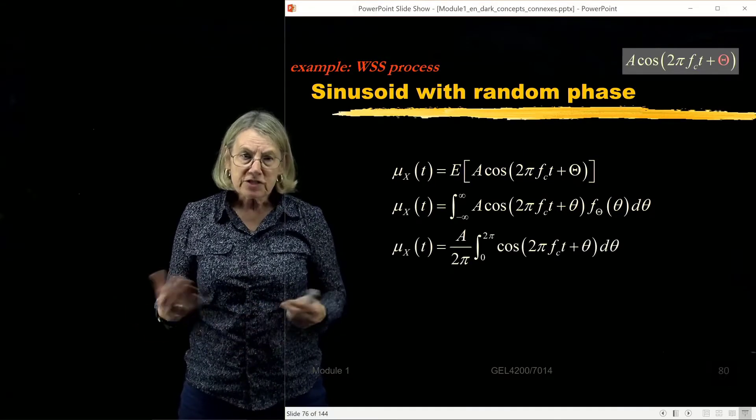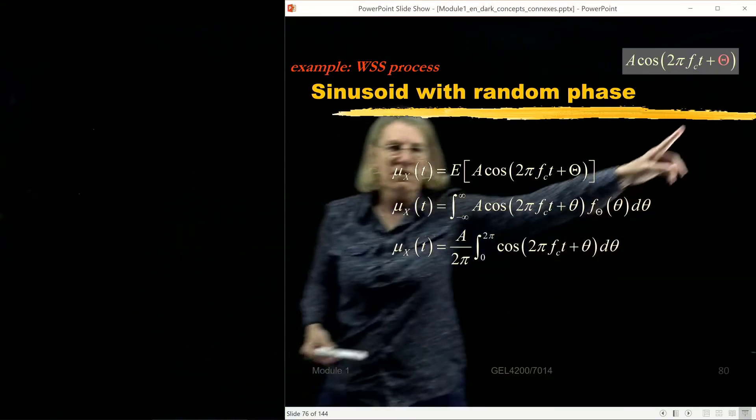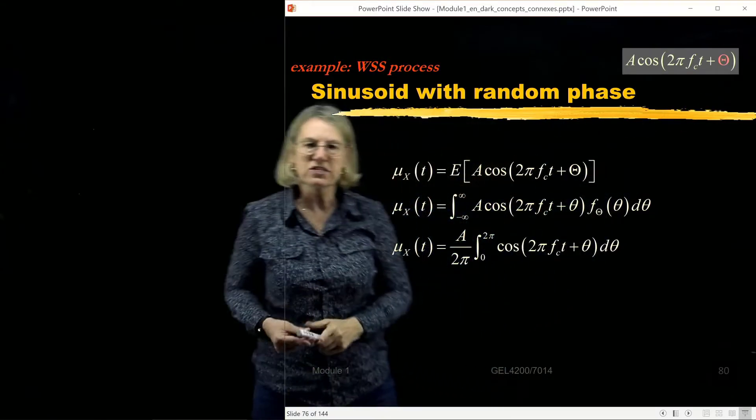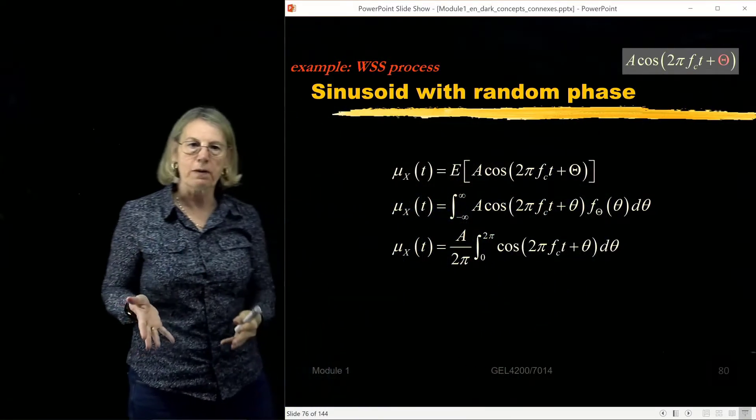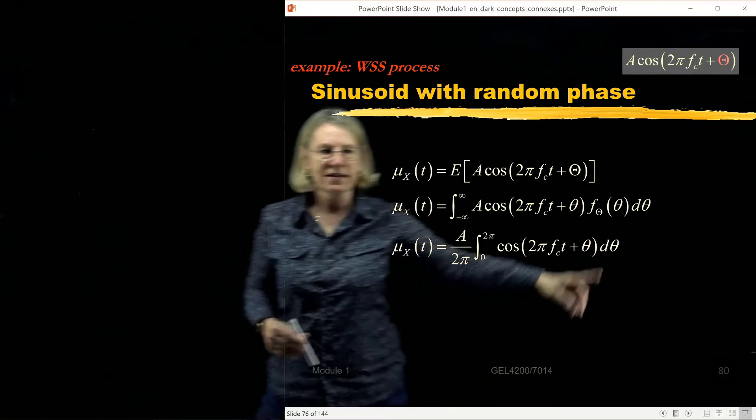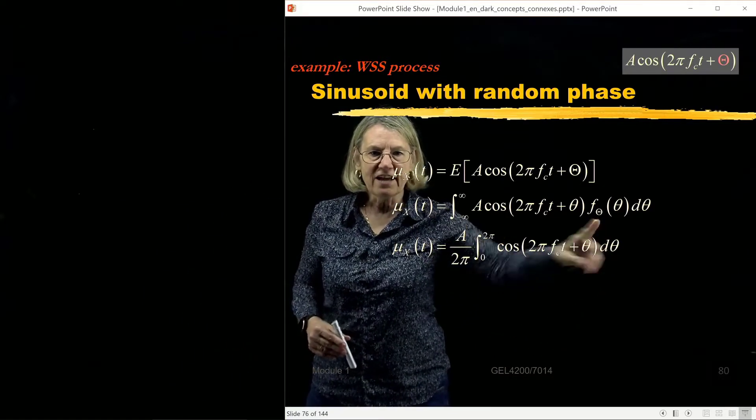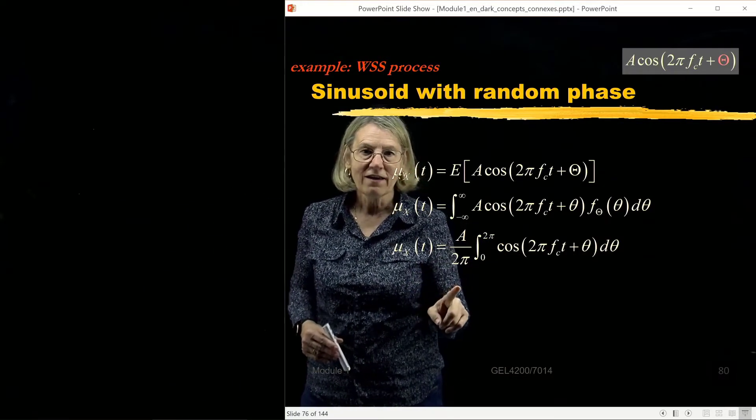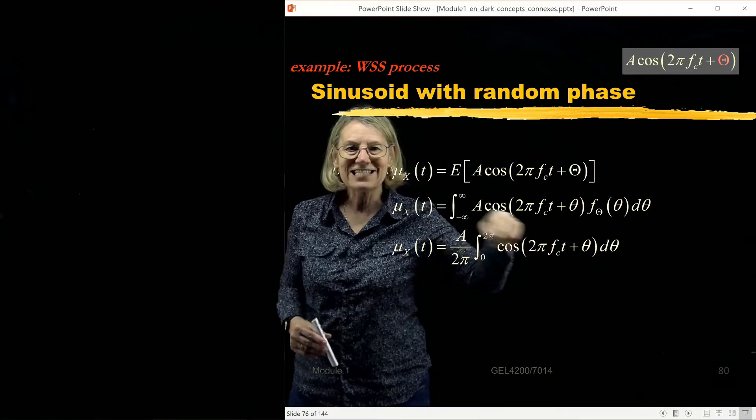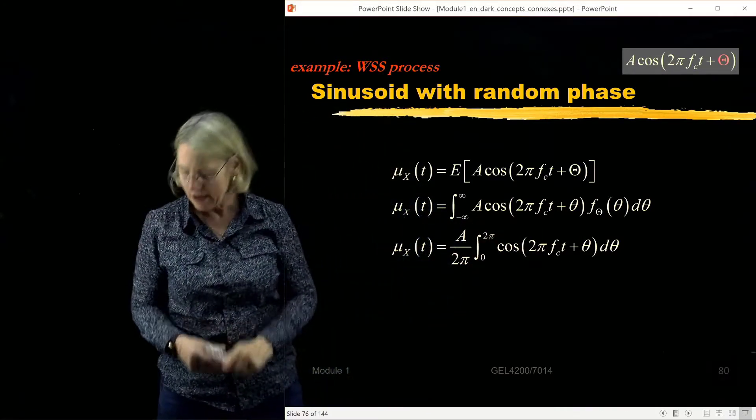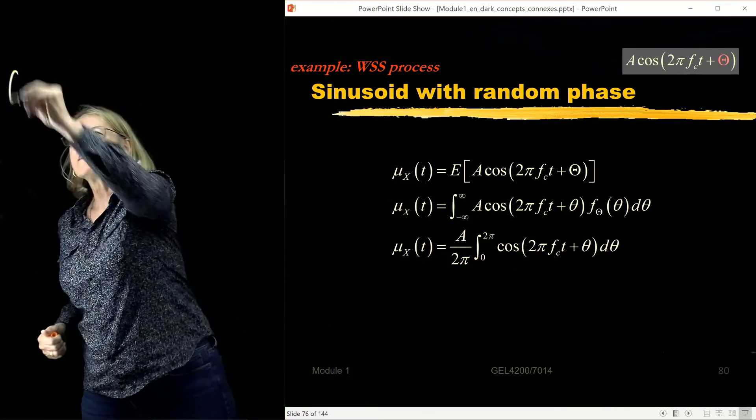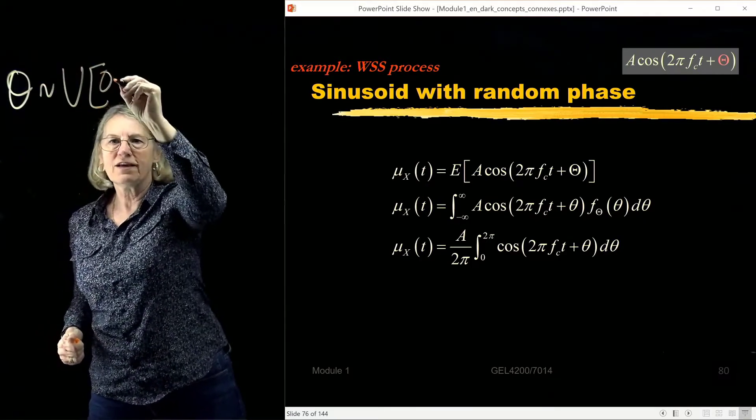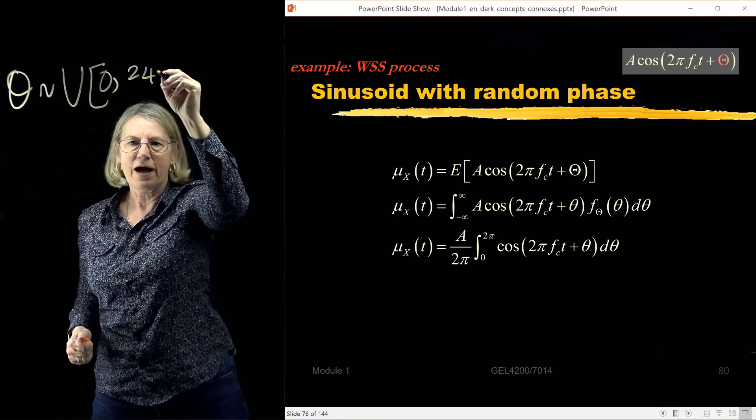So I'm going to assume that the theta is uniformly distributed between 0 and 2π. That means that f of theta is 1 over 2π and it's only nonzero in the interval from 0 to 2π. So I'm saying that theta is uniformly distributed over 0 to 2π.